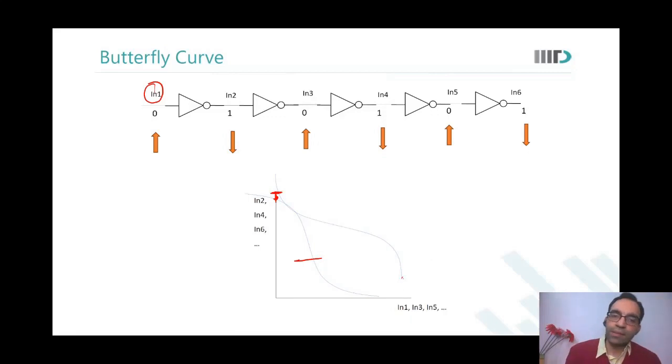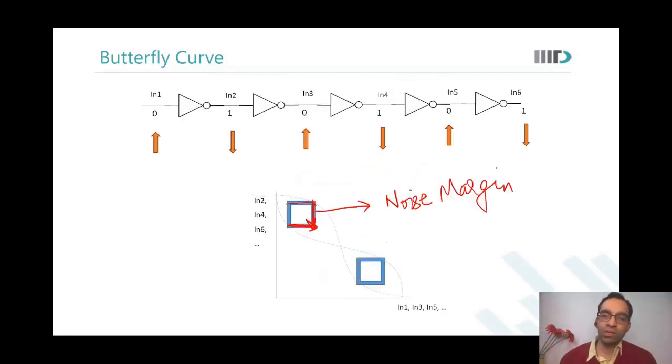So the point where these two curves kind of stop having an intersection, this is no longer like a butterfly curve, that point is your noise margin. So the largest, the longest you can go up and left is what your noise margin is. In a way, we are again reiterating that the biggest square you can fit into the lobe is what the noise margin is.